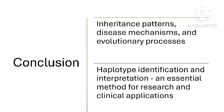While haplotypes can provide important clues to genetic predisposition, the environment and gene-environment interactions also play a significant role in the manifestation of many diseases. Thus, haplotype analysis must be interpreted within the broader context of genetic and environmental factors. To conclude, haplotype analysis is a cornerstone of modern genetic research, offering valuable insights into the structure and function of the genome. Its applications span a wide range of fields, and advancements in genomic technologies and statistical methods continue to improve our ability to harness its power. As our understanding of the human genome deepens, haplotype analysis will undoubtedly remain a critical tool in both basic and applied genetic research.